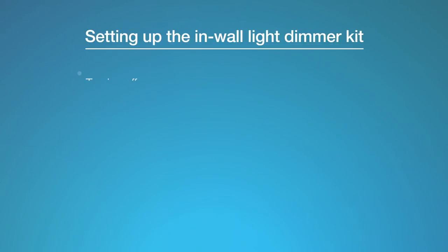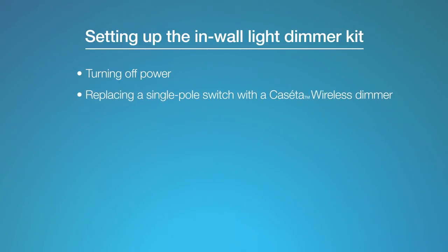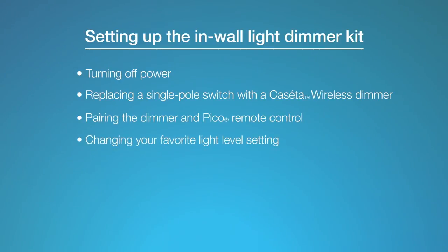We'll cover turning off power, replacing a single-pole switch with a Caseta Wireless Dimmer, pairing the dimmer and Pico remote control, changing your favorite light level setting, and finally, adjusting the dimming range for LED and CFL light bulbs. Let's get started.